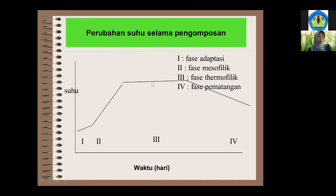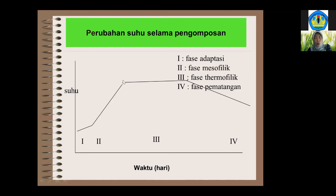Setelah tercapai suhu yang sangat tinggi tadi, kemudian terjadi pergantian, diambil alih proses degradasinya oleh organisme yang termofilik, yang mampu bekerja pada suhu di atas 50 derajat Celsius. Sedangkan mikroorganisme mesofiliknya mati karena tidak tahan pada suhu tinggi. Fase termofilik ini bisa berlaku 2-3 minggu tergantung dari limbah yang dikomposkan. Kulit kakao misalnya seminggu dua minggu sudah turun, tetapi kulit kopi sampai sekitar empat minggu masih bertahan di suhu termofilik.